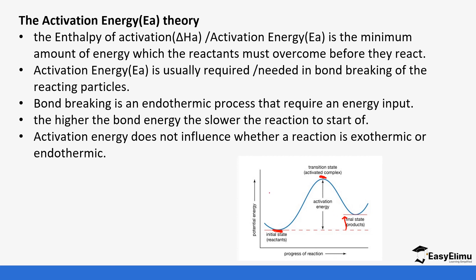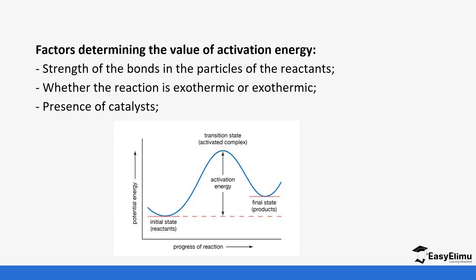The activation energy can be a lot or small, and it will affect how fast a reaction occurs. There are some factors that determine the value of the activation energy, such as the strength of the bonds in the particles of the reactant. If the bond is very strong, it means it will have a higher activation energy; if the bond is not that strong, it will have a lower activation energy. Whether the reaction is exothermic or endothermic and the presence of catalysts also affect this — we will come to catalysts and how they help overcome the activation energy faster.